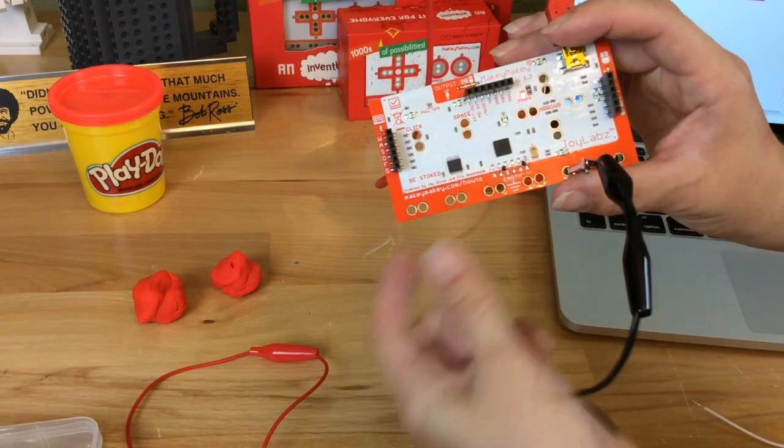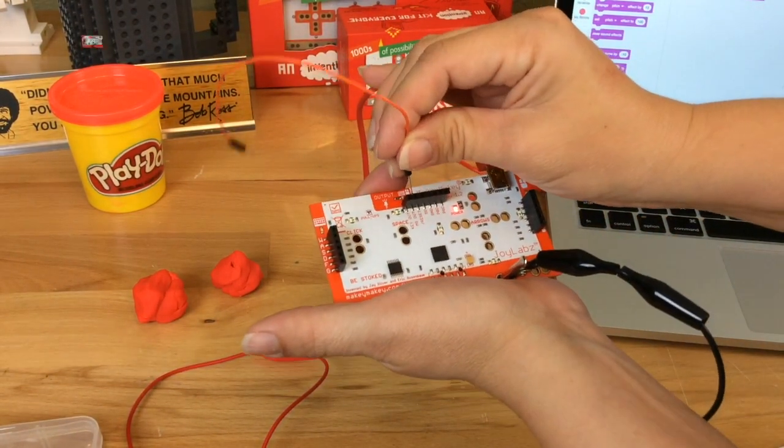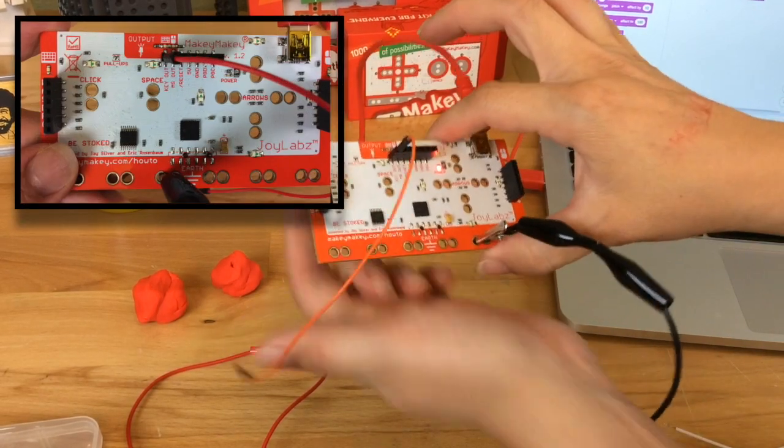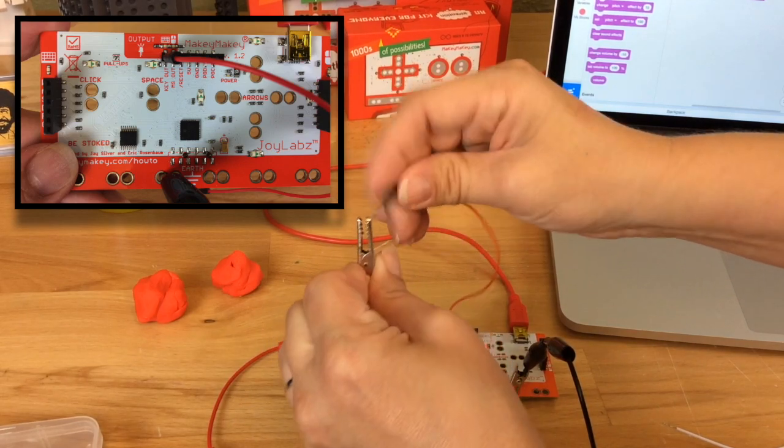So to make an LED light up only when you press a key, you're going to put your jumper wire into key out. And I'm going to go ahead and just connect a regular alligator clip to it so I can clip onto my LED just for now.